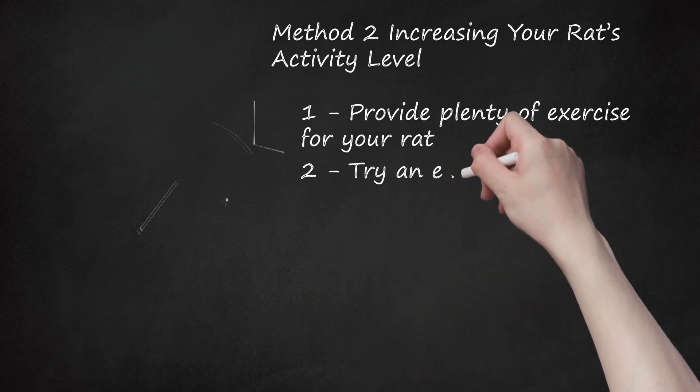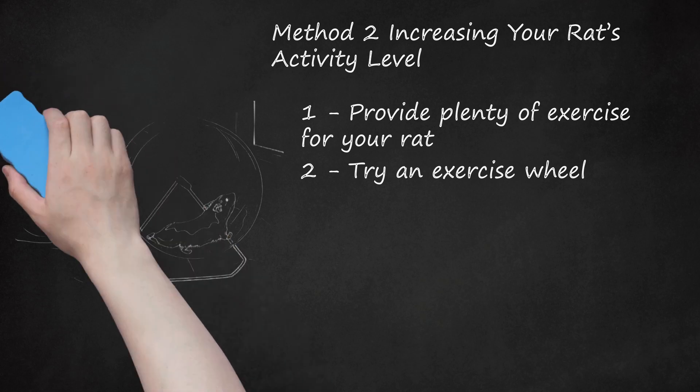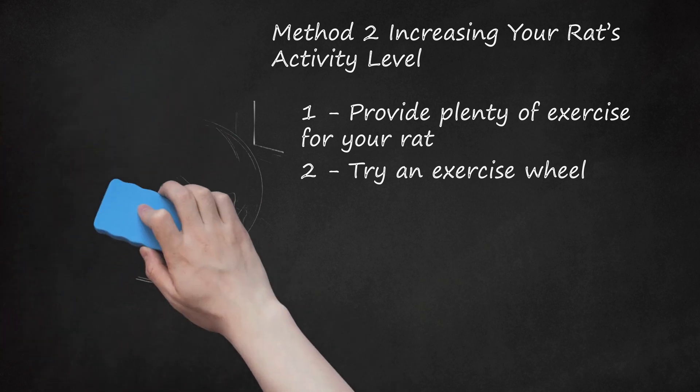Second, try an exercise wheel. Your rat might enjoy running on an exercise wheel, which is the rodent version of a treadmill. Make sure the wheel you find is large enough for your rat and solid or with very small mesh to protect the rat's feet and to avoid a rat tail being caught and damaged. Never get a metal wheel with rungs or a crossbar which could get your rat's tail tangled in it. Not all rats will enjoy running on an exercise wheel, and some may use it only for napping. However, for those rats who do enjoy it, an exercise wheel can be a great way to run off excess energy.